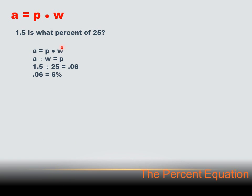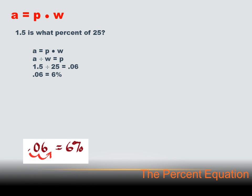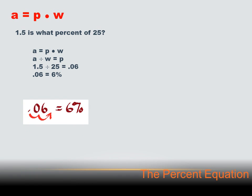Let's put down our formula: A equals P times W. We're trying to solve for P, so I want to isolate P — I need to get rid of that W. I'm going to divide both sides of the equation by W, which leaves A divided by W equals P. I know A and I know W, so I can substitute: 1.5 divided by 25 equals .06. But they're asking for a percentage, not a decimal. So I've got to convert .06 into a percentage by moving the decimal two to the right, and .06 becomes 6%.